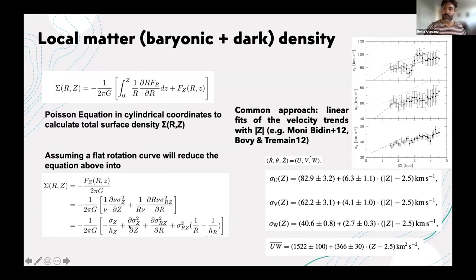Now we have quantities that we measure. We measure the velocity dispersion. We measure the velocity tensor. The velocity dispersion is the diagonal. We can measure the vertical height and the vertical length.